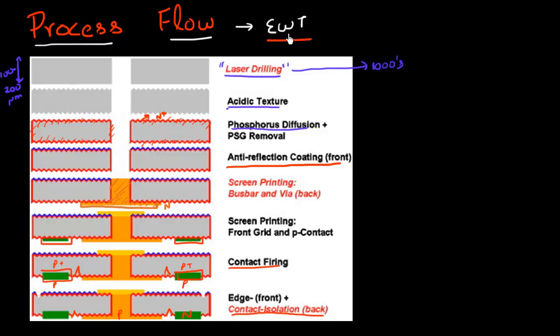Towards the end, you get this emitter wrap-through cell. There are many processes which are pretty complex. One is you require very high throughput drilling of these holes, which is easier said than done. Then this screen printing of metal such that it fills the hole via is again a complicated process. Even though emitter wrap-through gives better efficiency and minimizes shading, it still requires some amount of development before it becomes a widely produced or commercialized cell.